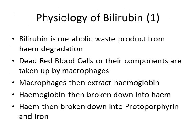Of all these different pigments, we're going to go mostly into the physiology of bilirubin. Bilirubin is a metabolic waste product from the breakdown of red blood cells, specifically the heme part. The hemoglobin in red blood cells is broken up into its protein — the globin and the heme — and the heme is degraded.